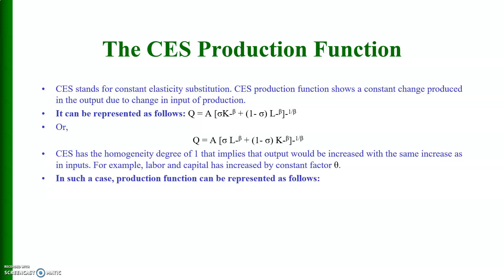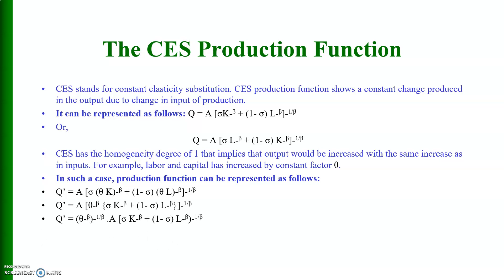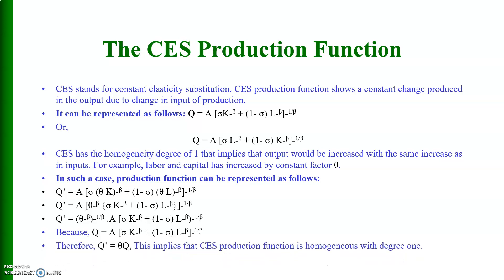Since Q = A · [α · K^(−β) + (1−α) · L^(−β)]^(−1/β), therefore Q' = θ · Q. This implies that the CES production function is homogeneous of degree one. Just like the Cobb-Douglas production function, if we increase the inputs by some proportion, the output will increase by the same proportion. For example, if we increase the inputs by 5%, the output will also increase by 5%.